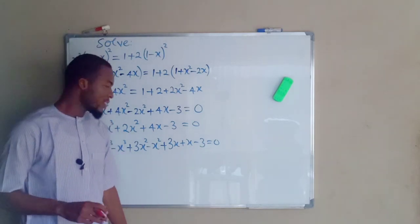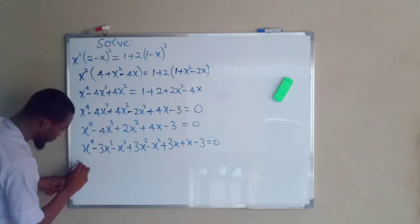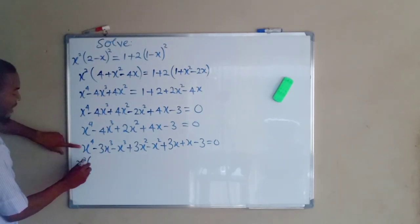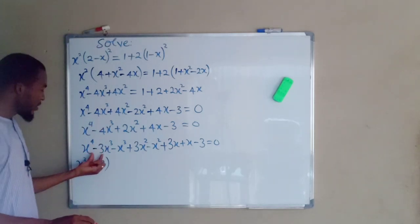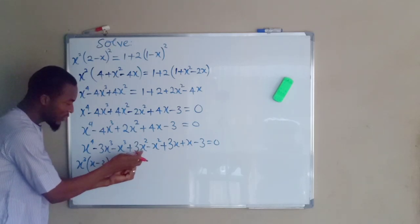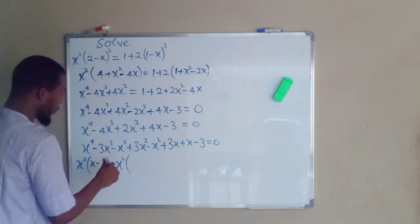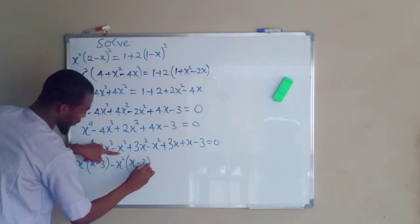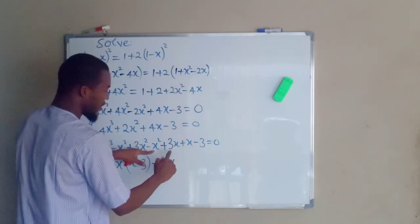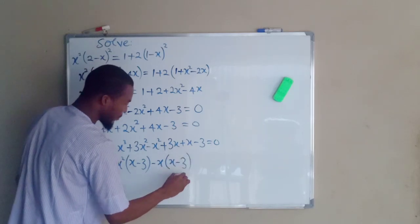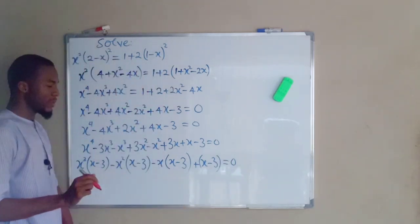We are going to factorize in batches — first two terms, second two terms, and so on. I am going to factor out x to the power of 3 from the first batch: x cubed times the quantity x minus 3. Then for the second batch I factor out negative x squared: negative x squared times the quantity x minus 3. Then the next terms give us x minus 3, and we have x minus 3 at the end as well — all equal to zero.